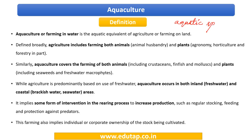This aquatic species can be aquatic plant species as well as animal species. So we are not restricting ourselves to only aquatic animals, plus we are not restricting ourselves to only fishes. It's a broader term. The environment in which they are cultured is not restricted — it can be in freshwater, it can be in marine water, it can also be in brackish water.